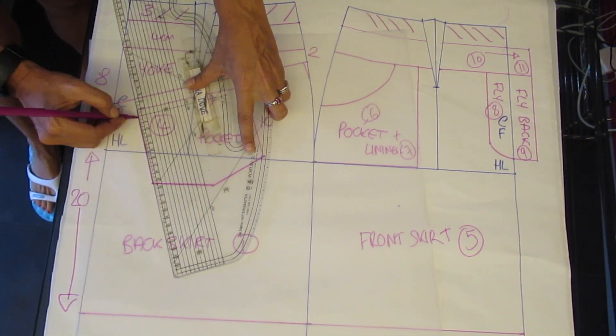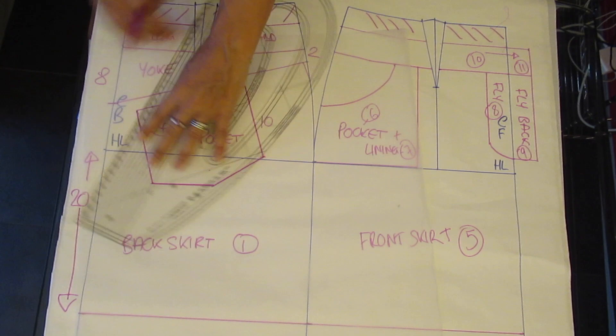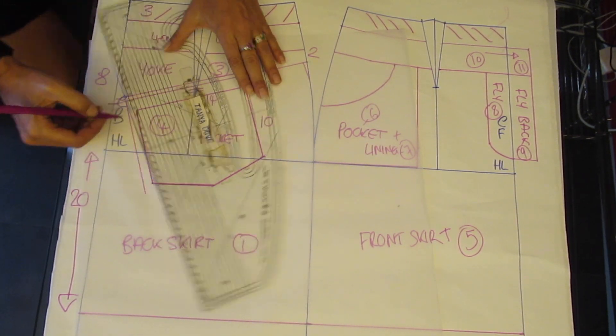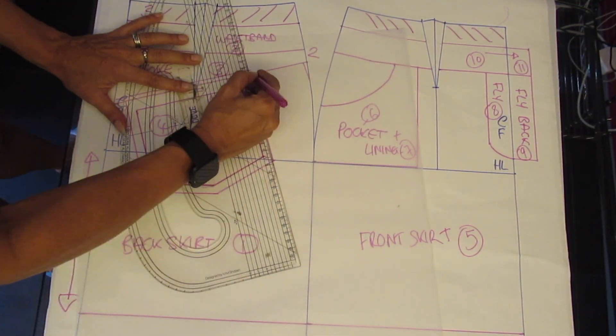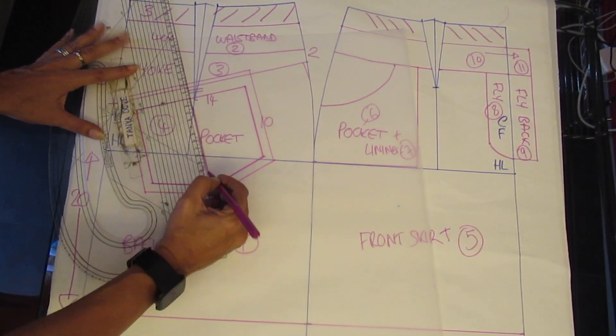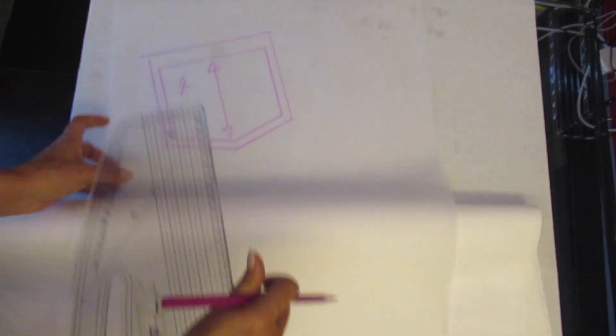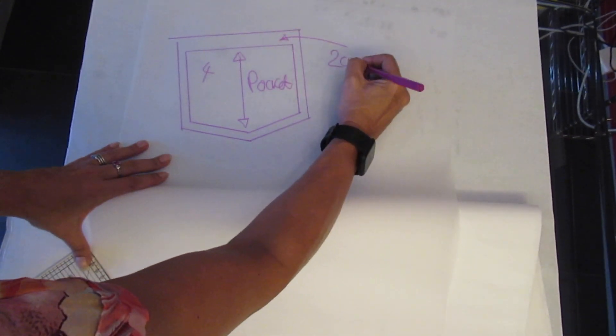Trace off your pocket. This has 1cm seam around the edges but the top edge which is the opening has a 2cm hem. The grain line of the pocket is at a right angle to the top edge not the position on the plan. This will give the pocket the straight grain.